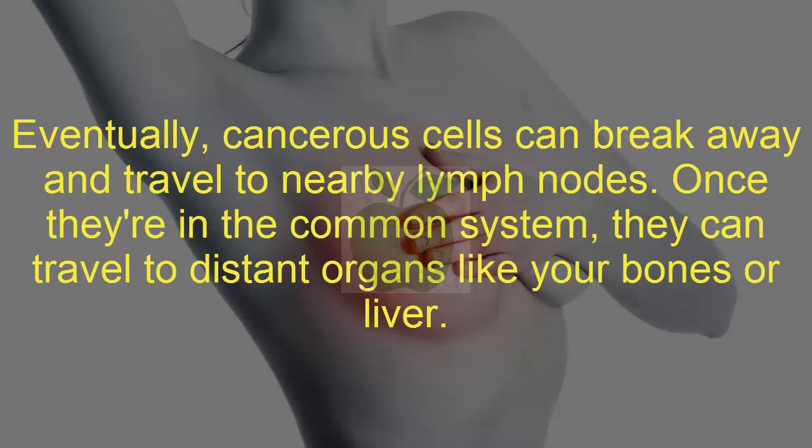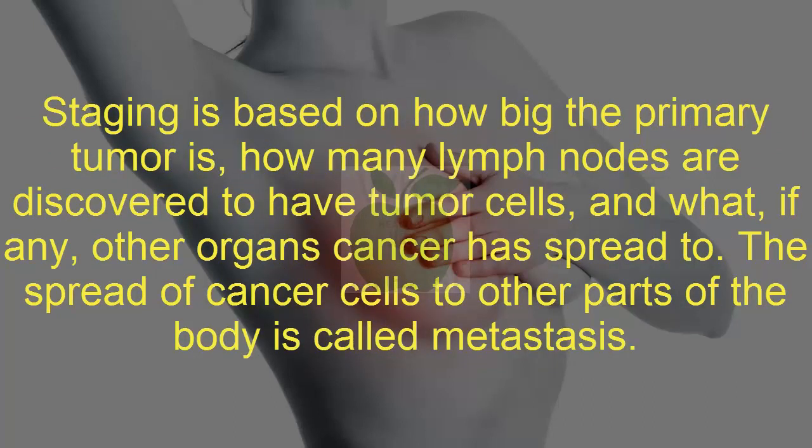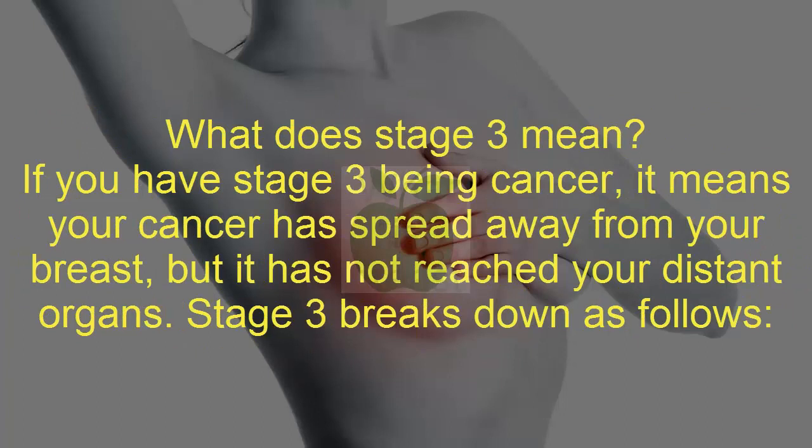Staging is based on how big the primary tumor is, how many lymph nodes are found to have tumor cells, and whether cancer has spread to other organs. The spread of cancer cells to other parts of the body is called metastasis. If you have stage 3 breast cancer, it means your cancer has spread beyond your breast but has not reached distant organs.